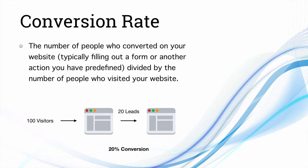Conversion rate is the number of people who converted on your website divided by the number of people who visited. A conversion can be filling out a lead generation form, a sale, a click, or any activity you define. For example, if I get 100 visitors and 20 fill out a form, the conversion rate is 20%. Conversion rate is usually measured for sales and leads.